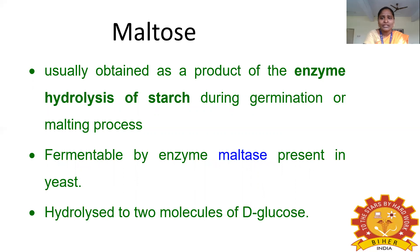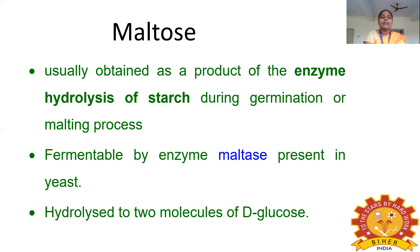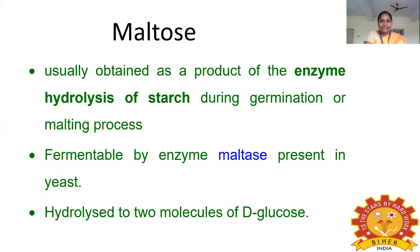Maltose is often produced as a product of enzymatic hydrolysis of starch during germination or the malting process. The enzyme maltase, present in yeast, degrades maltose and finally yields two molecules of D-glucose — one alpha D-glucose and one beta D-glucose.